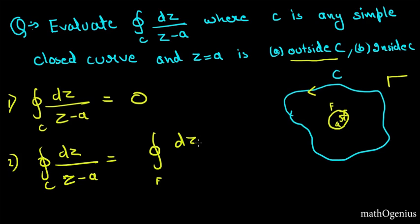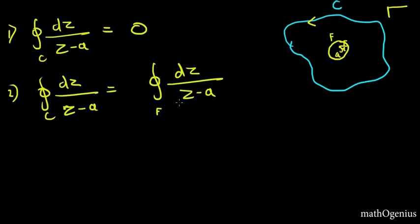Okay, so now let's focus on our question. So along gamma: dz by z minus a. Now we have done this. What we will do is we will change this integral